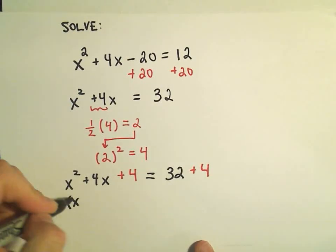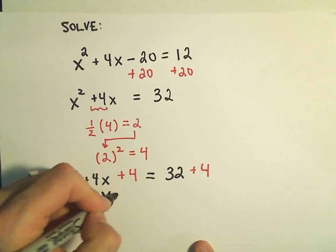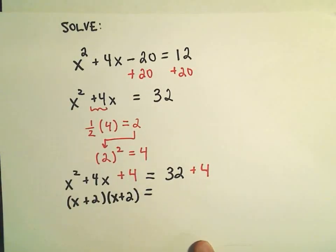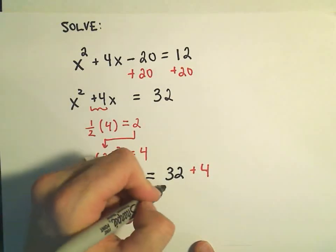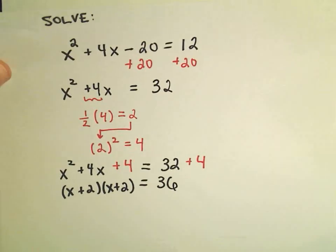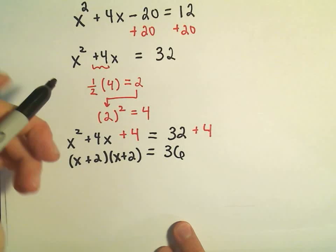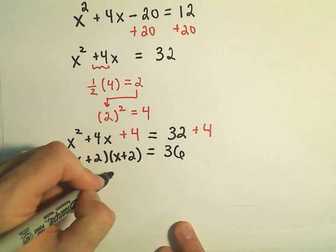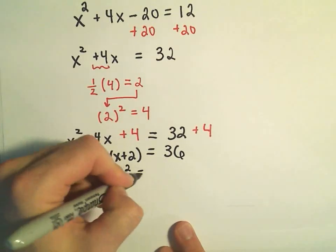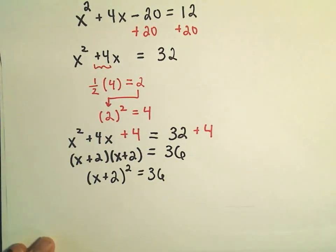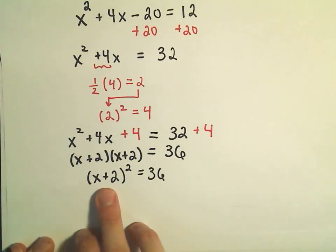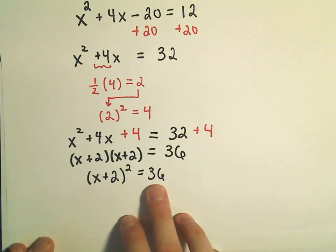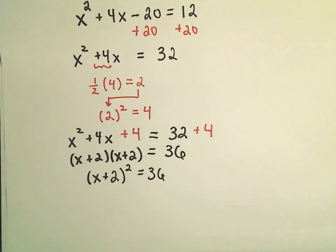It factors as x plus 2 times x plus 2. On the right side, we have 32 plus 4, which is 36. And if you take x plus 2 times x plus 2, we can simply rewrite this as x plus 2 quantity squared equals 36. So this is sort of phase 1. This is the first thing you want to get done, is you want to make the left side into a perfect square. And you'll have some number hanging around on the other side, that's fine.